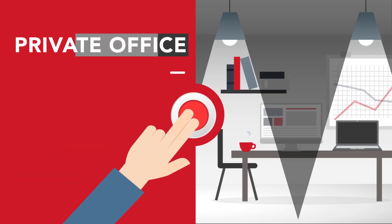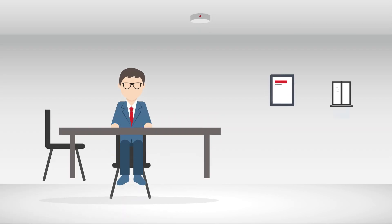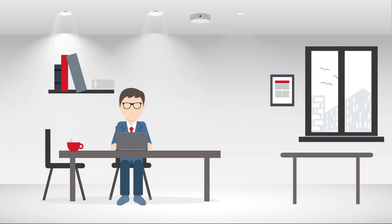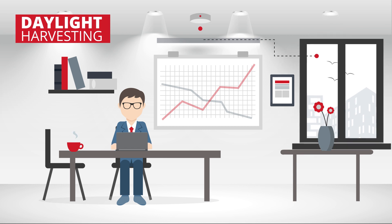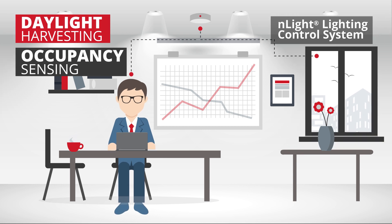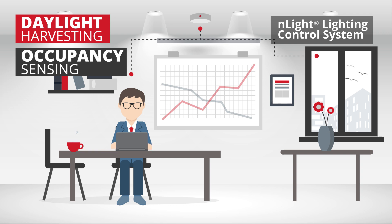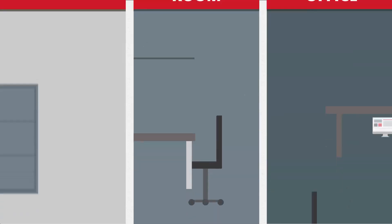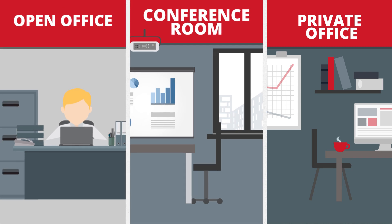Lastly, Gerald's office. This is where Gerald does all his best thinking, holds small meetings, and crafts proposals. Daylight harvesting and occupancy sensing are effective tools to make sure the light quality is always optimal for Gerald's task and device.